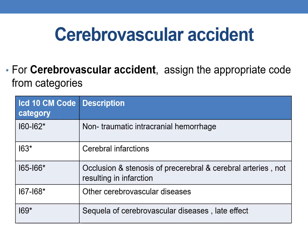Coming to the various categories of cerebrovascular accident: sub-series I60 to I62 deals with non-traumatic intracranial hemorrhage, whereas category I63 deals with cerebral infarctions, and categories I65 to I66 deal with occlusion and stenosis of pre-cerebral and cerebral arteries not resulting in infarction. I67 to I68 deals with other cerebrovascular diseases, and finally the I69 series deals with sequelae of cerebrovascular diseases, that is the late effect.